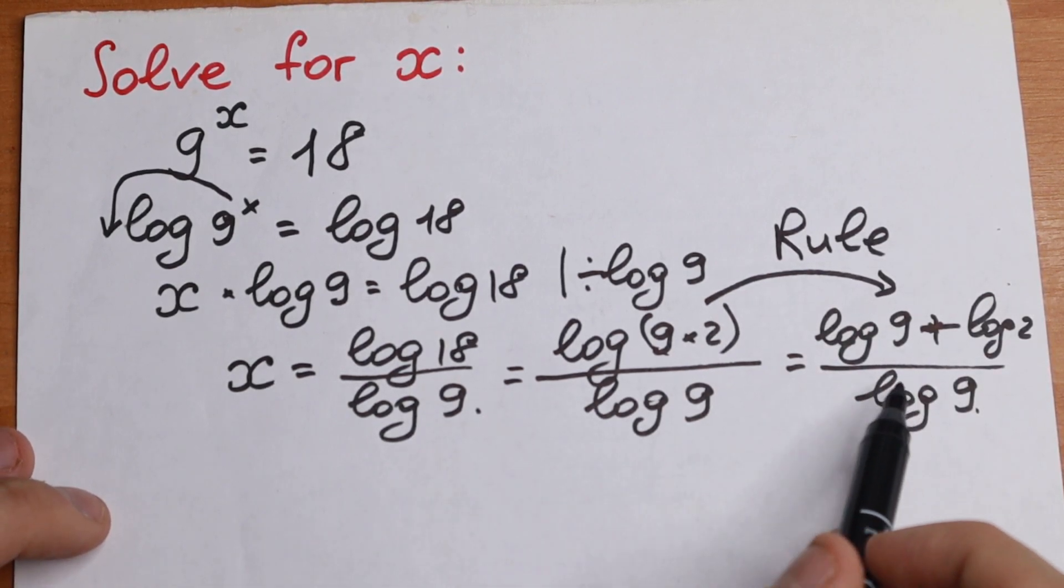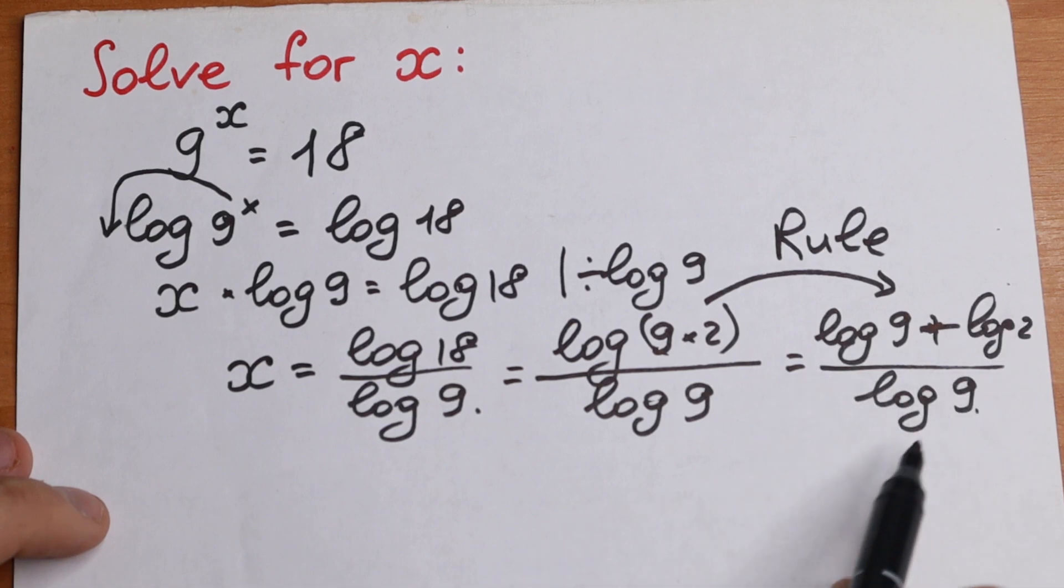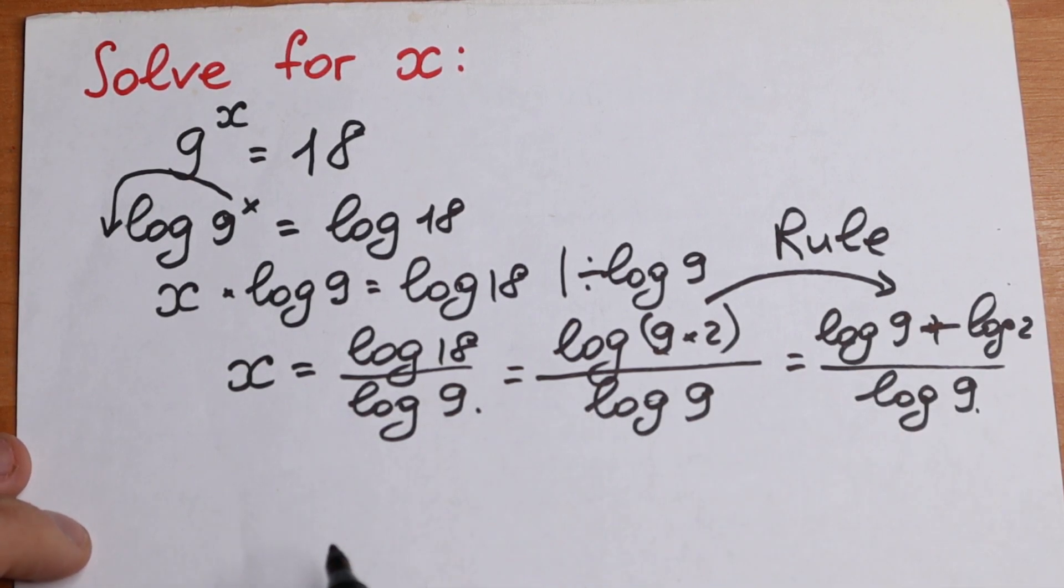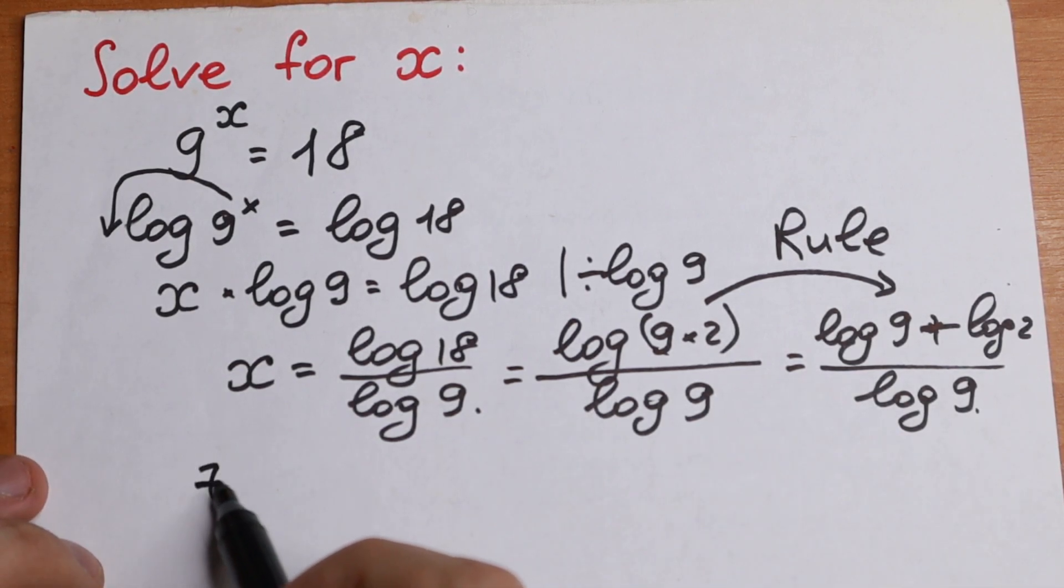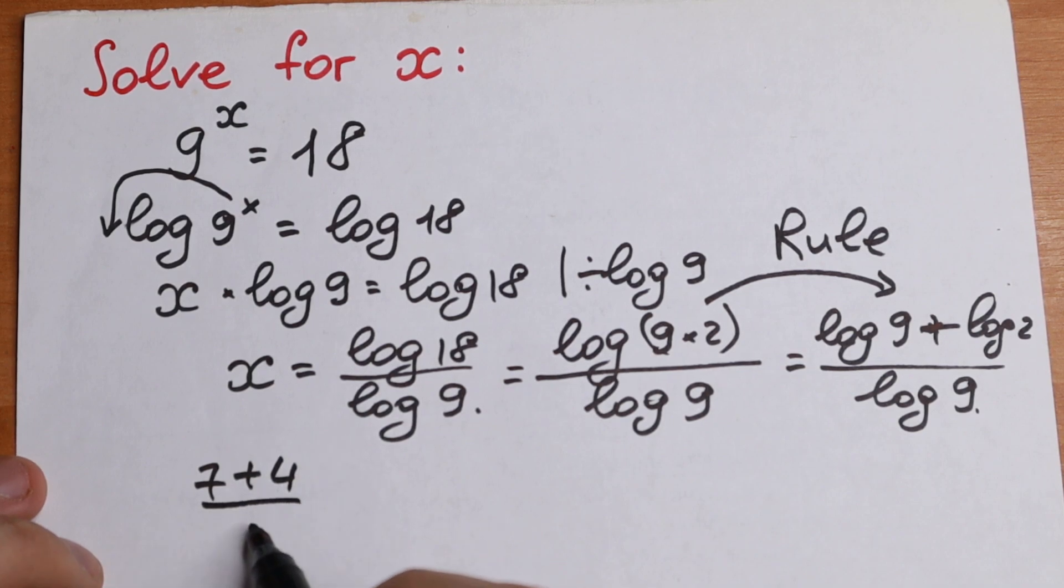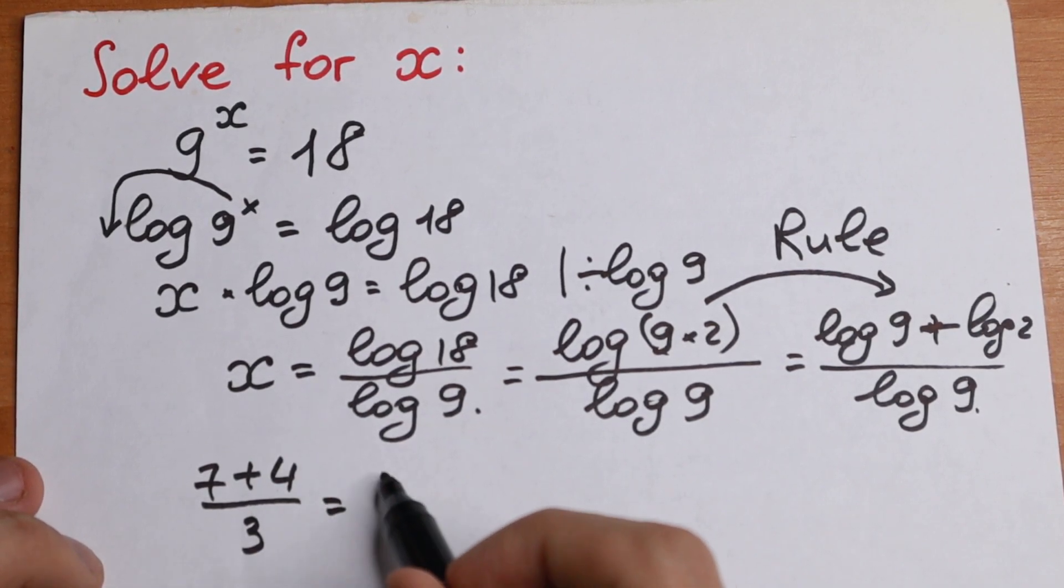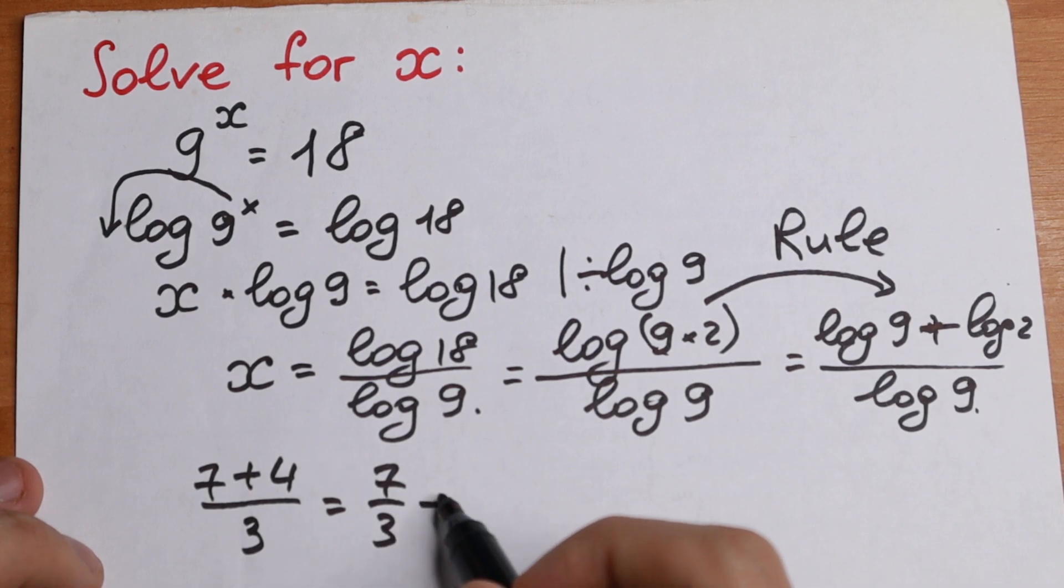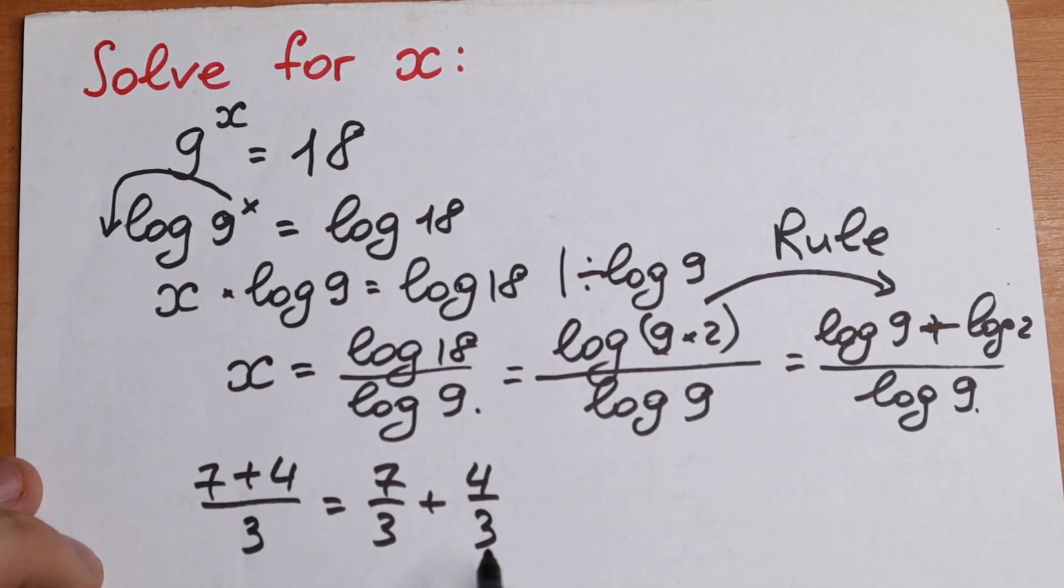So what we're going to do in our case, if we divide in both parts by log 9, we'll have a really good answer. Because, if we have, for example, 7 plus 4, dividing by 3, we can write it as 7 dividing by 3 and plus 4 dividing by 3. And if we add this, we'll have the same. So let's use this rule right here, let's use this logic.